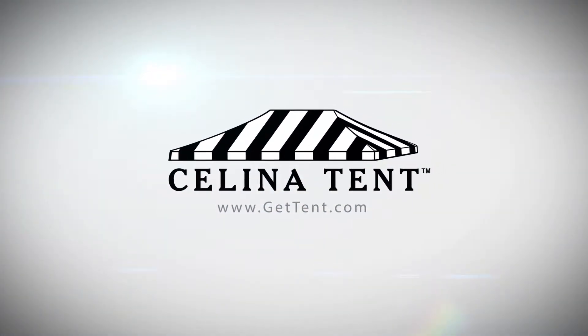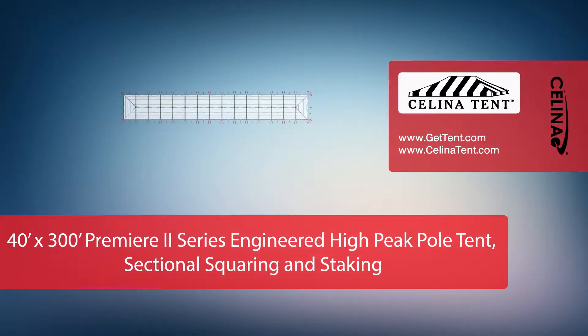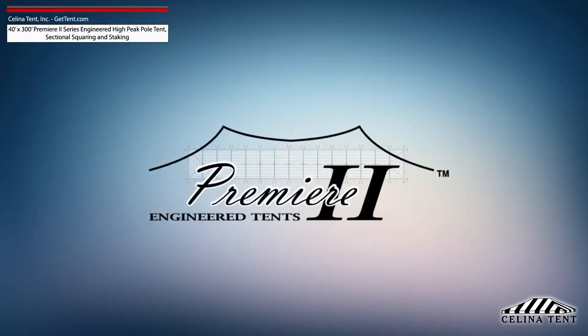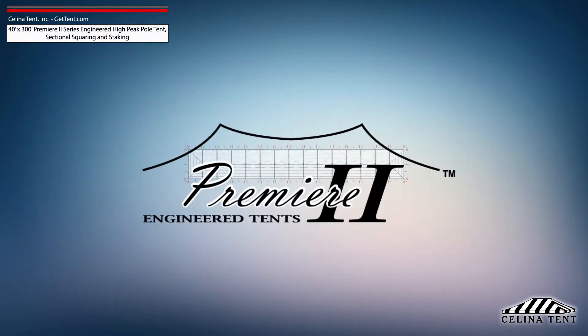GetTent.com. This video covers squaring and 5-foot staking applicable to a sectional 40-foot by 300-foot Premier 2 Series High Peak Pole Tent from Celina Tent.